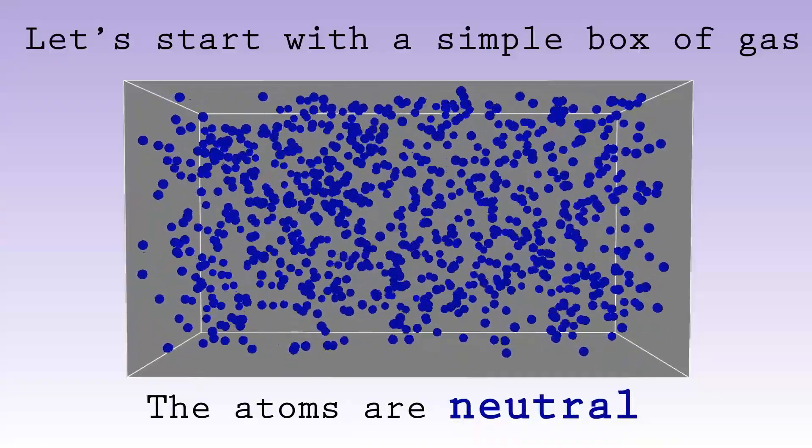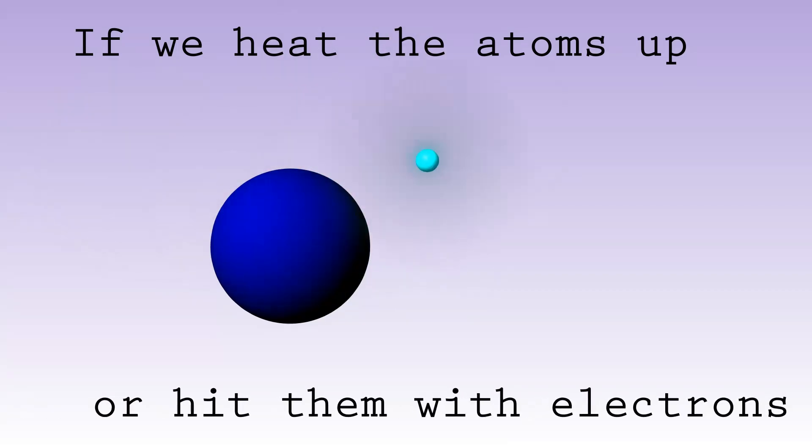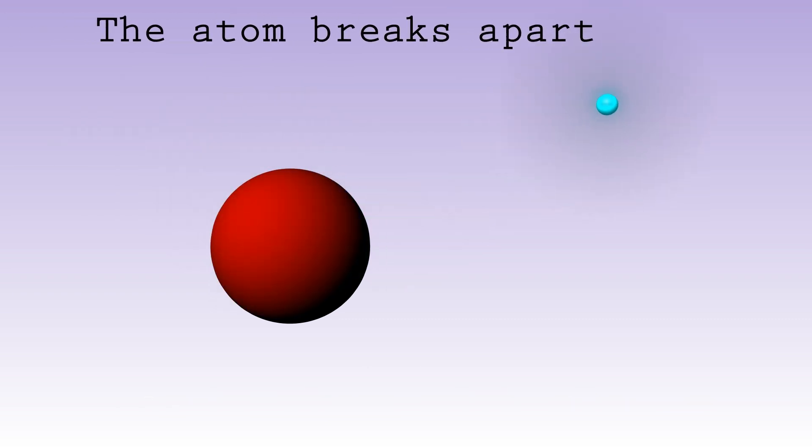Each atom contains equal numbers of positive protons and negative electrons. But these electrons can be knocked off the atoms if we heat the gas up or bombard them with other electrons. The process is called ionization, and it leaves behind a positively charged ion and a negatively charged free electron.